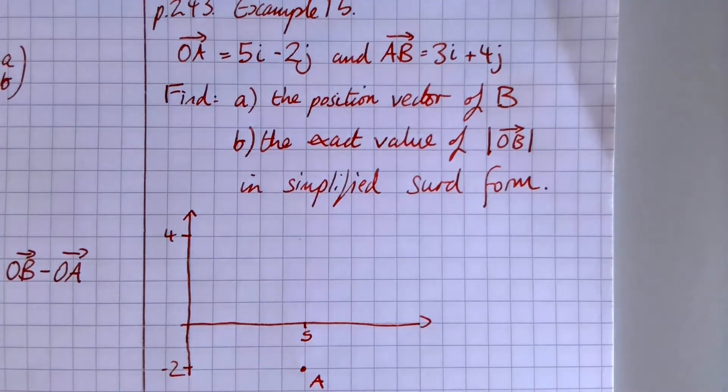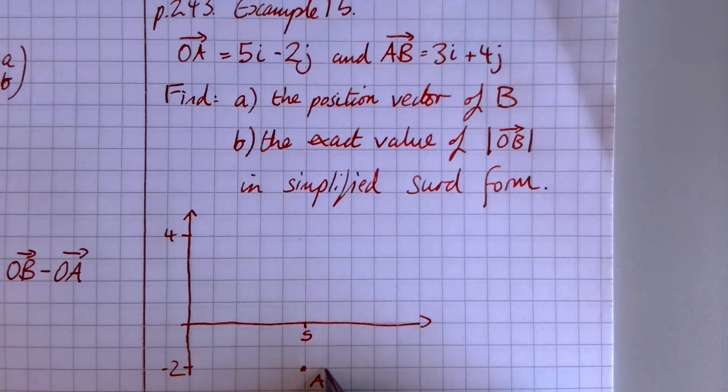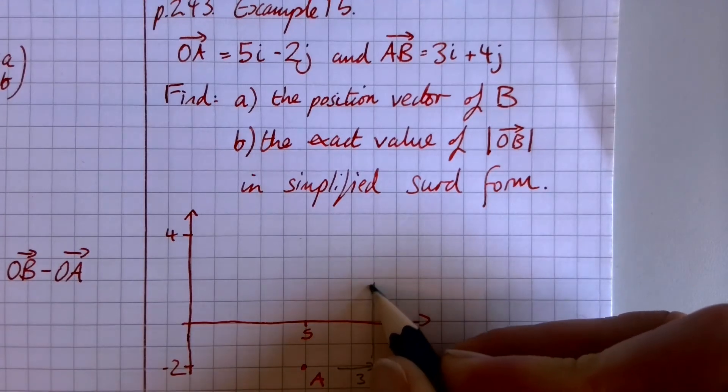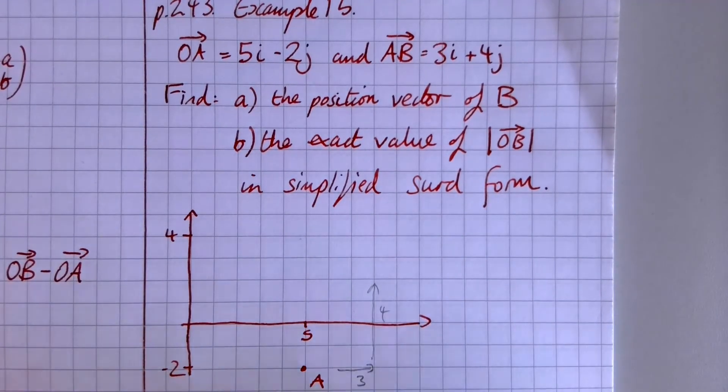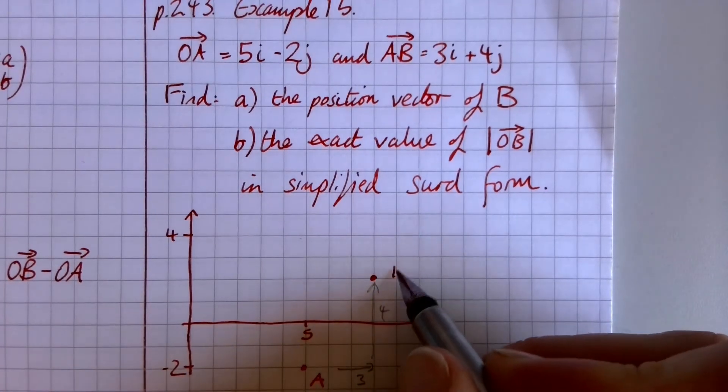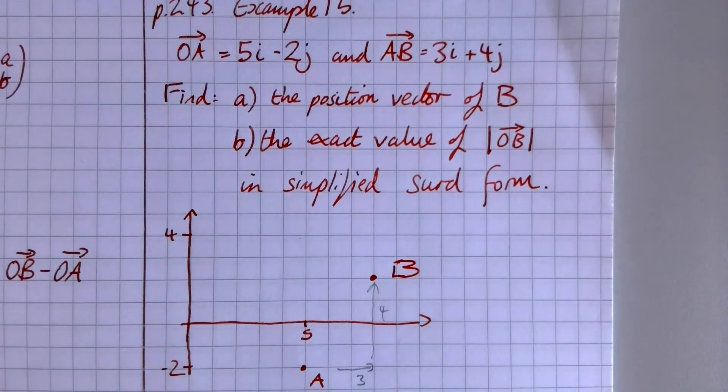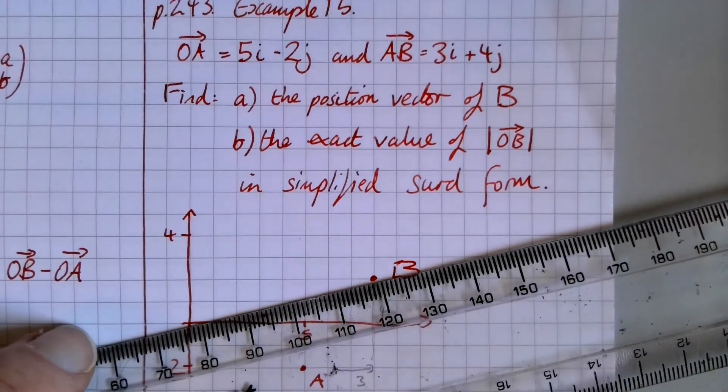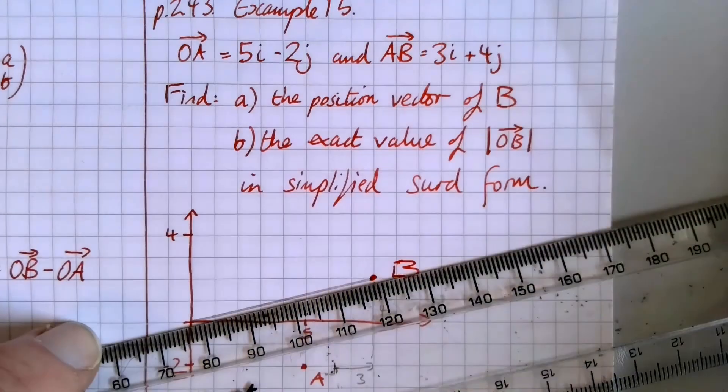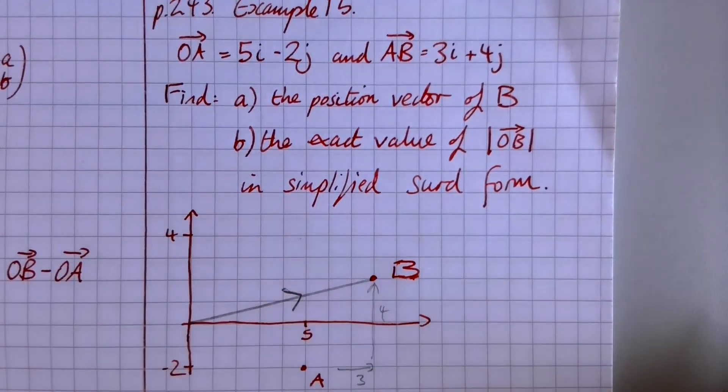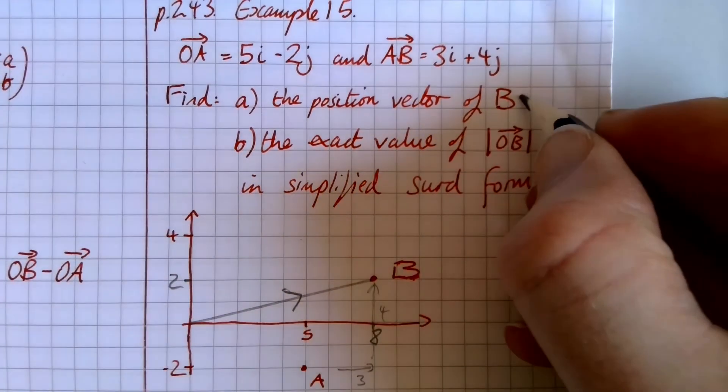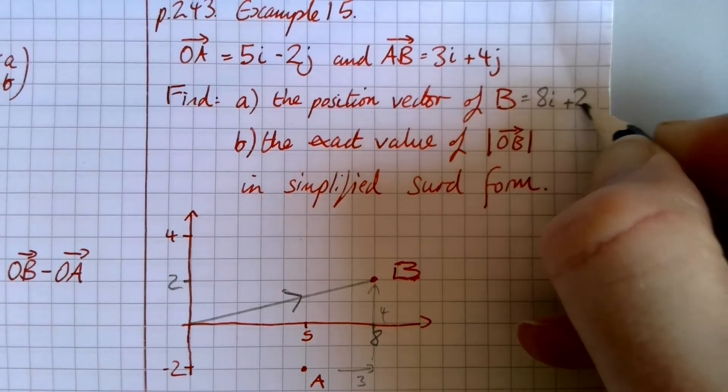And we know that from A to B, we're going to be going 3i. So that is across 3 and 4j. 1, 2, 3, 4j. So that's telling me I can get up to B being just there. And what they want to know with the position vector of B is what do we do to get from the origin to B? So that would be along 8i plus 2j.